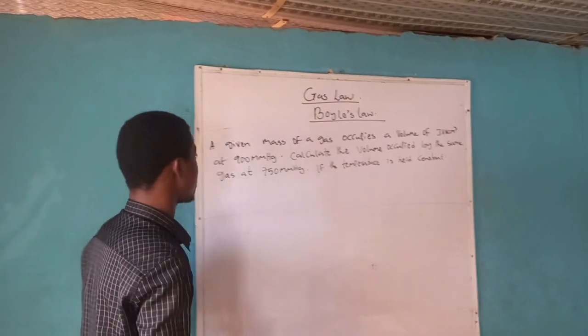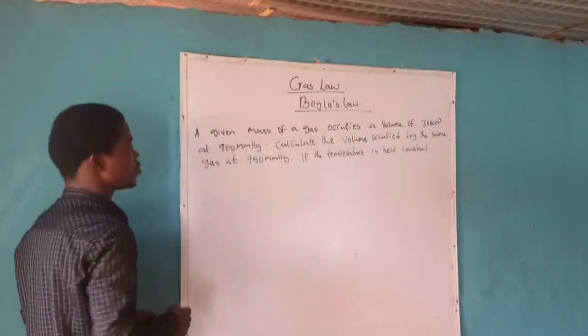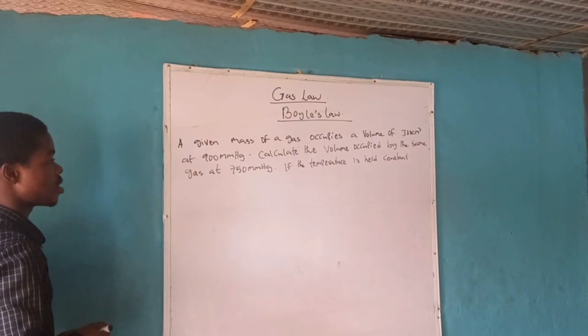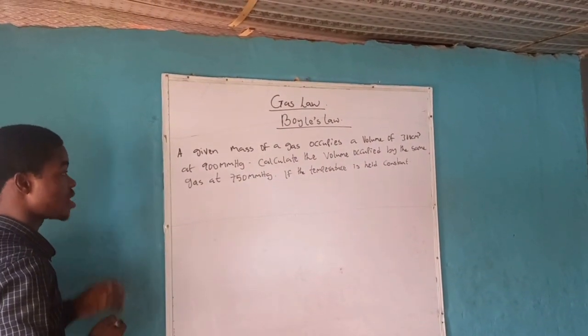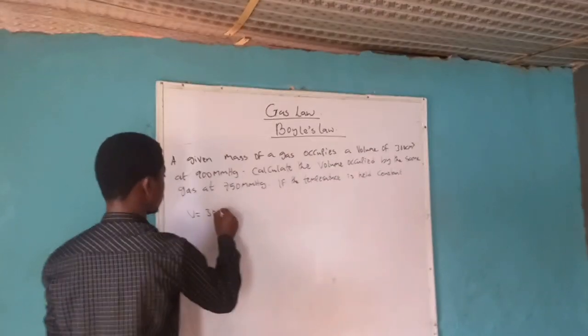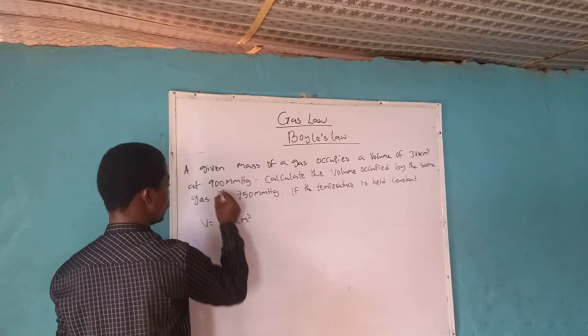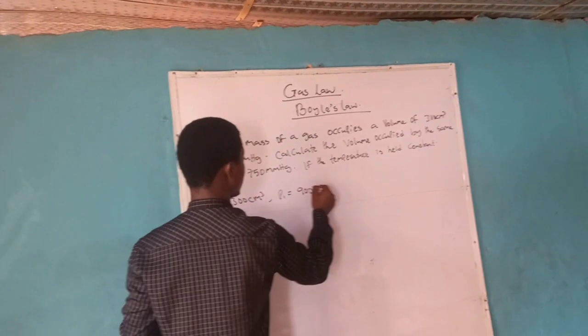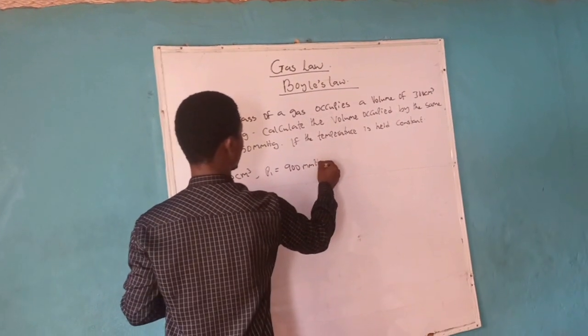Look at the first example. A given mass of a gas occupies a volume of 300 centimeter cube at 900 millimeter mercury. So the first volume that we have here is 300 centimeter cube, and the first pressure is 900 millimeter mercury.